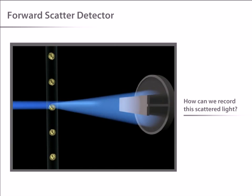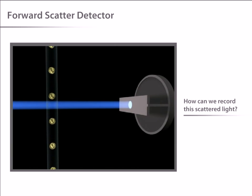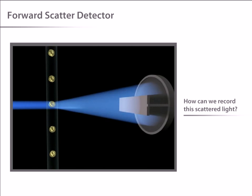The obscuration bar prevents any of the intense laser light from reaching the detector. As a cell crosses the laser, light is scattered around the obscuration bar and is collected by the detector.